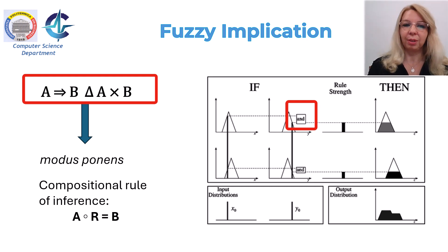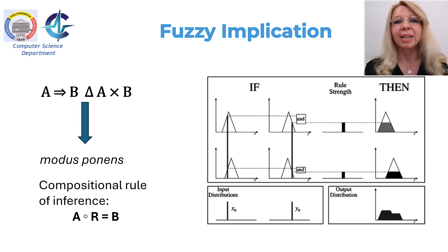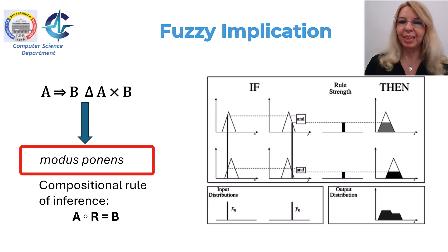In order to draw conclusions from a rule base, we need a mechanism that can produce an output from a collection of if-then rules. This is done using a rule of inference. With simple logic, there is a famous rule of inference called modus ponens. It can be stated as follows: if it is known that the statement A implies B is true, and also that the statement A is true, then it can be inferred that B is also true. Fuzzy logic generalizes this into generalized modus ponens.